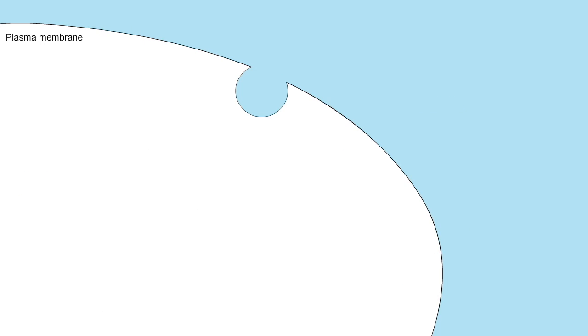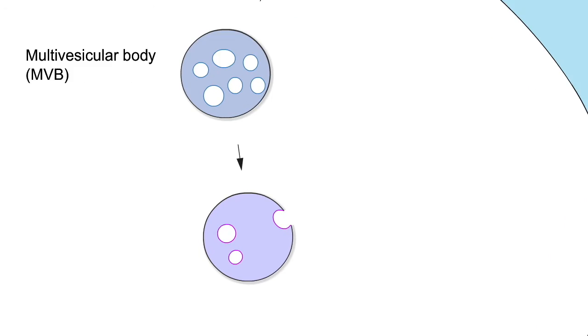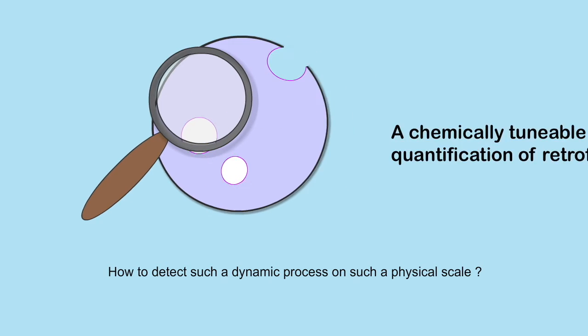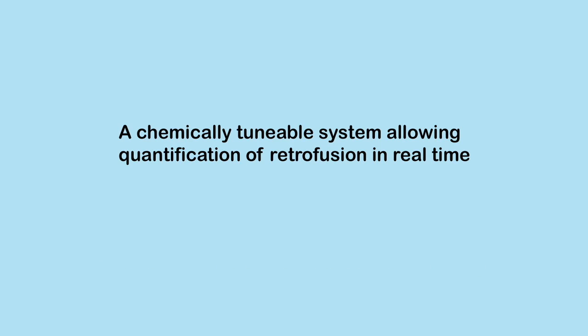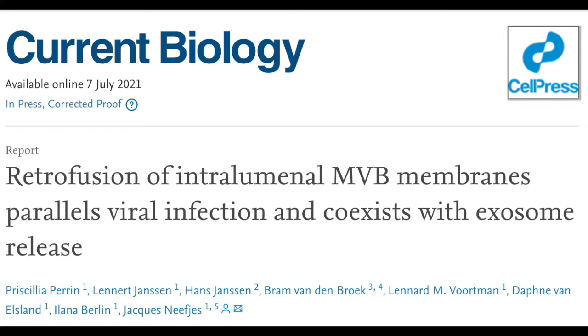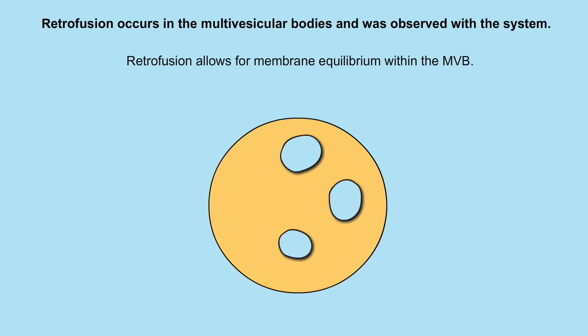While these and other leads point to retrofusion as a useful membrane pathway, the question of whether retrofusion actually takes place within the multivesicular body remains to be addressed. But how to detect such a dynamic process occurring on such a small physical scale? To tackle this problem, we developed a chemically-tunable system allowing observation and quantification of retrofusion in real time. The details of this cell-based assay and its application can be found in our publication entitled Retrofusion Parallels Viral Infection and Coexists with Exosome Release by Perrin et al. Using our system, we have been able to establish the existence of retrofusion as part of the normal equilibrium of endolysosomal membranes and explore its relationship to degradation and exocytosis.